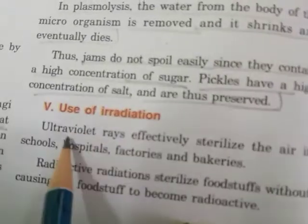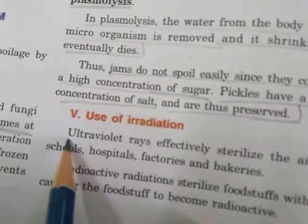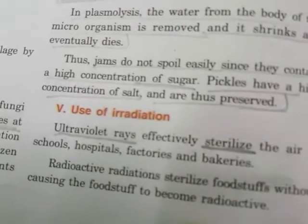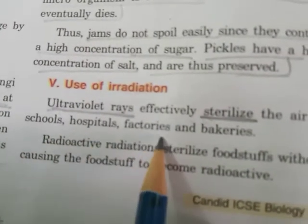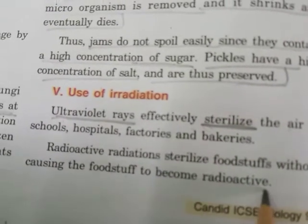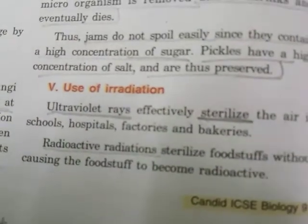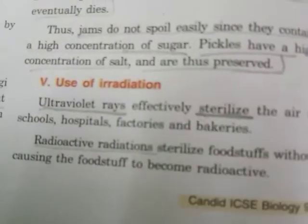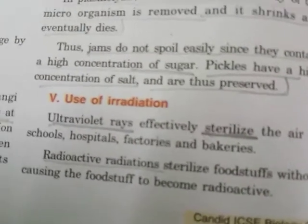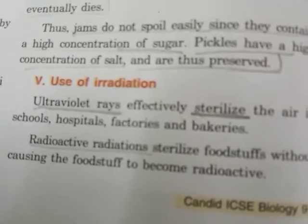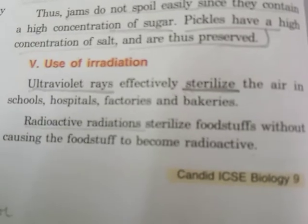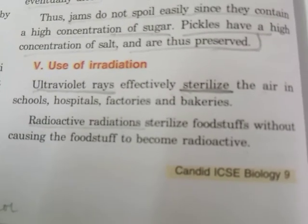Use of irradiation: ultraviolet rays effectively sterilize the air in schools, hospitals, factories, and bakeries. Radioactive radiations sterilize foodstuffs without causing them to become radioactive - the foodstuff doesn't become radioactive, but the radiations sterilize it. This concludes the chapter on economic importance of bacteria and fungi. Children, keep watching this video and revise the useful and harmful activities of microorganisms again and again. Thank you.